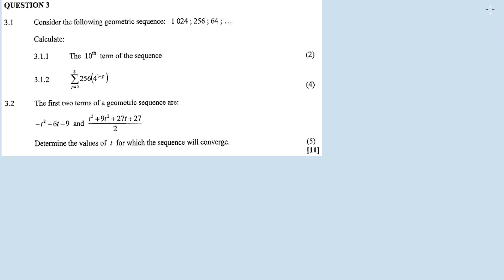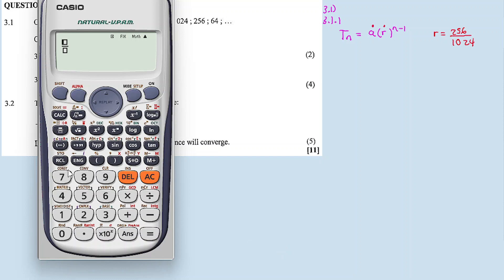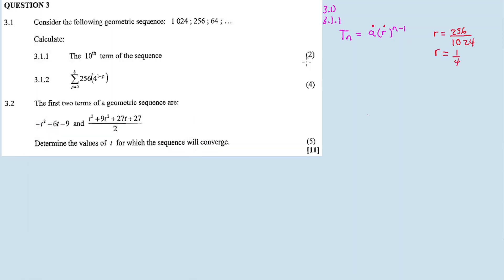Consider the geometric sequence T1, T2, T3 — basically three terms. We need to calculate the 10th term with 3.1.1. The 10th term is calculated using the nth term of the sequence. We do have r, we can calculate and substitute to find T10. So we calculate r using T1 and T2: r = 256 divided by 1024, which equals one over four. So r = 1/4.